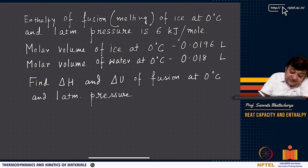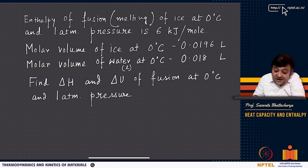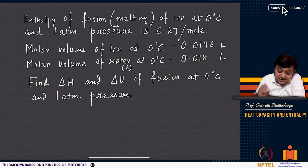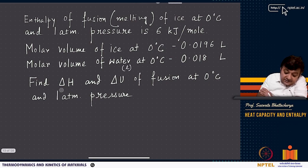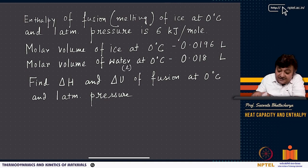Delta H of fusion is given as +6000 J (positive, because melting is endothermic — ice absorbs heat). The process is ice melting to water. Endothermic means heat is absorbed from surroundings by the system. Melting is endothermic; freezing is exothermic.